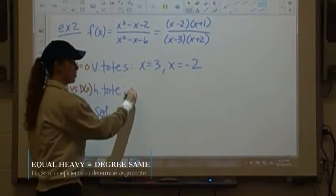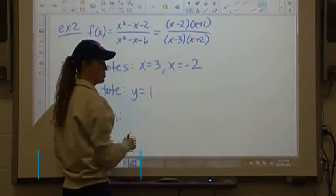We have a degree of 2 and 2, so this is equal heavy, meaning we just look at the coefficients. There's an imaginary 1 written in front of each of those, so 1 over 1 reduces to 1.